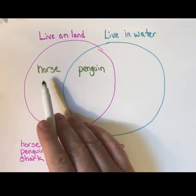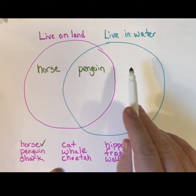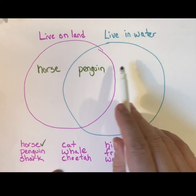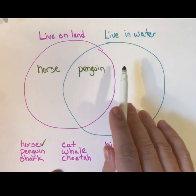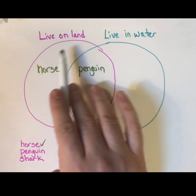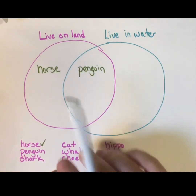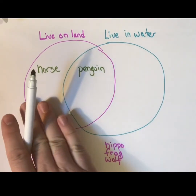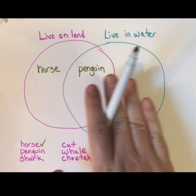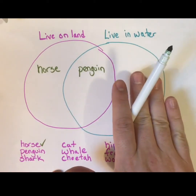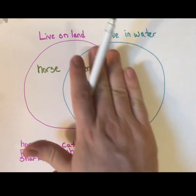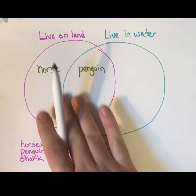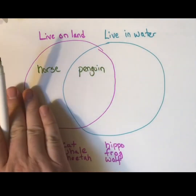Horses — well, they can swim, but they don't live in the water. That's not where they like to be. So horses live only on land, so they're only in the pink circle. They're definitely not water animals, so they don't fit anywhere inside the water circle at all — they're outside.